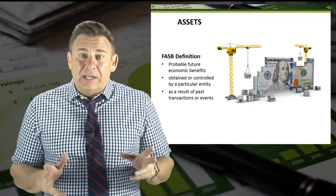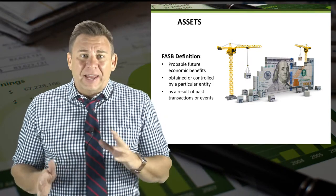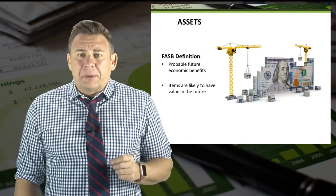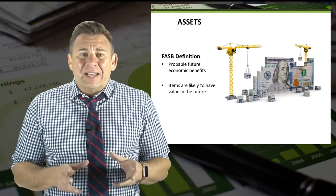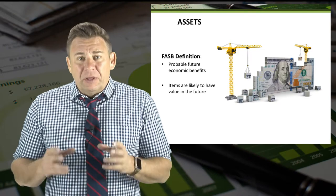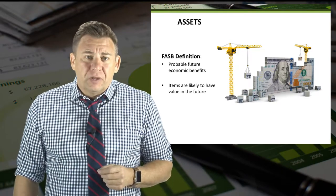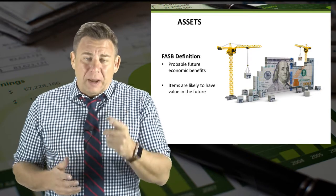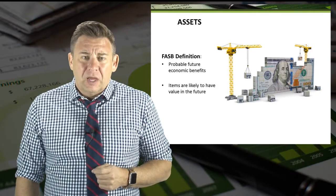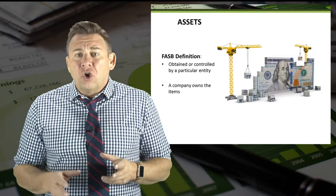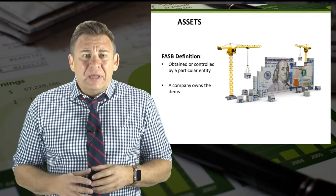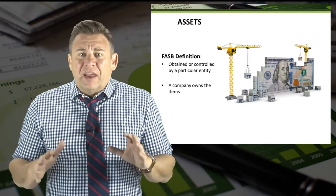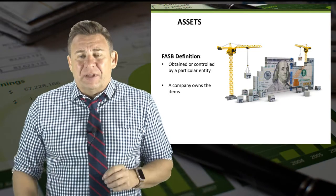That definition sounds very legal, so let's break it out into three parts. Probable future economic benefit means that an item will probably be worth something in the future. If you have an item described this way, you probably have an asset. Obtained or controlled by a particular entity means, at an accounting principles level, that a company owns the item that has value.